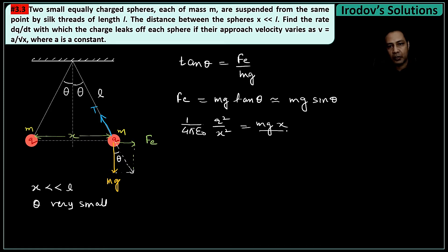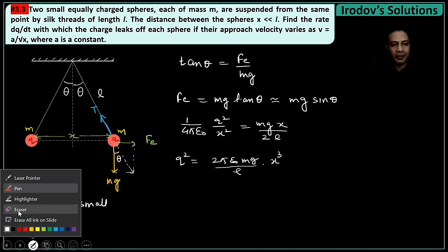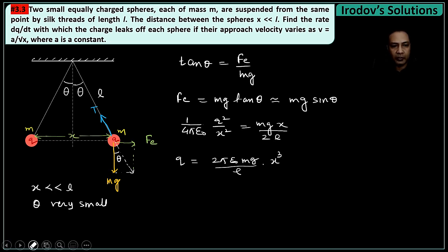So I can write q² = 2πε₀mg/l times x³. So I can write q = √(2πε₀mg/l) times x^(3/2).